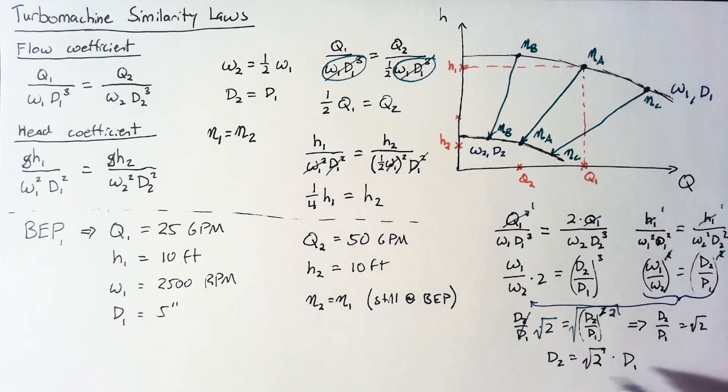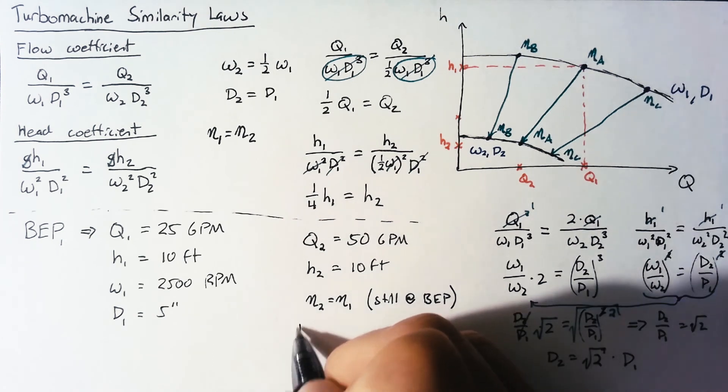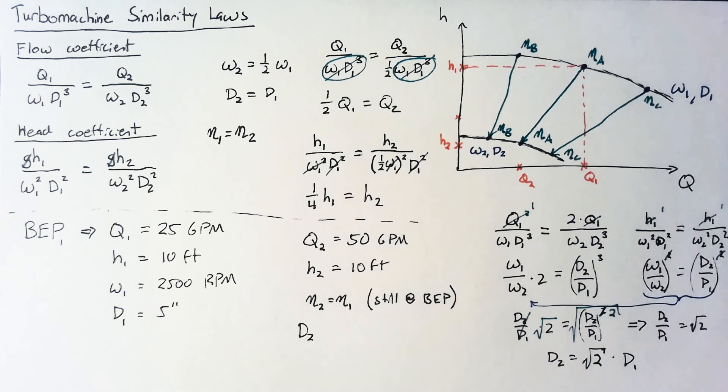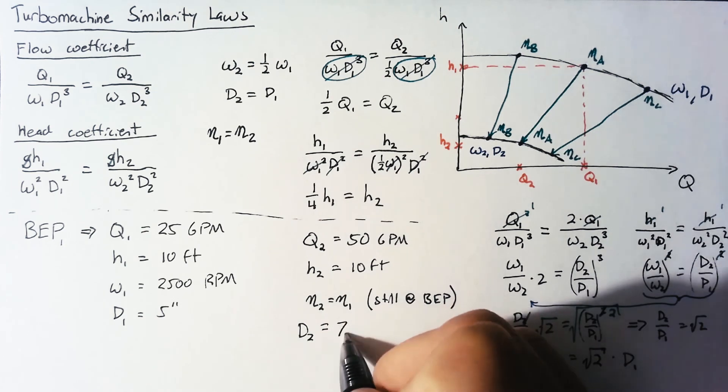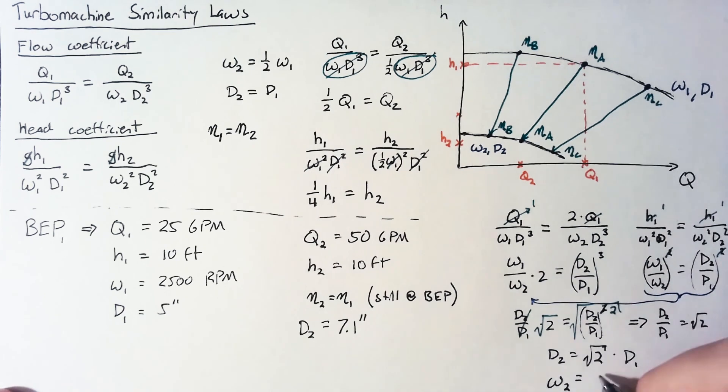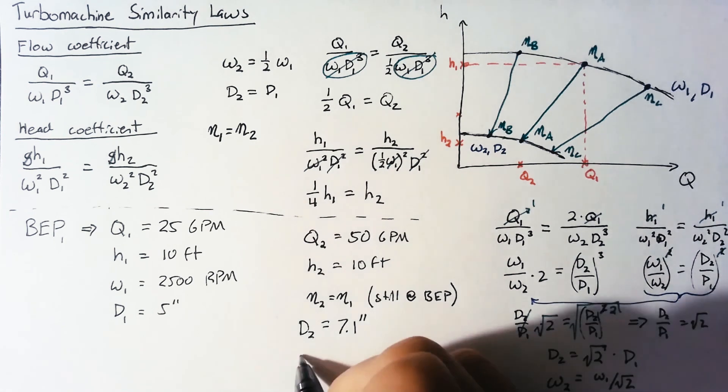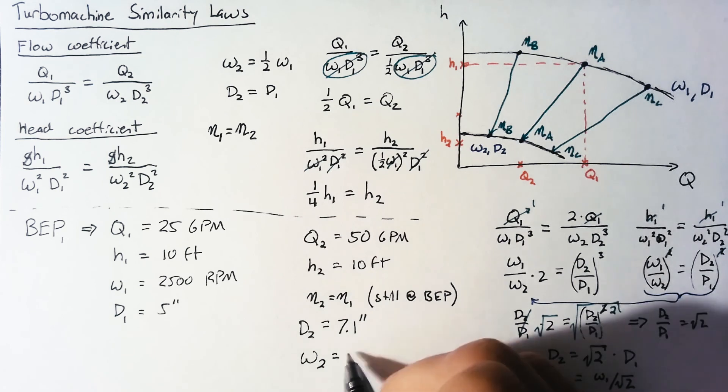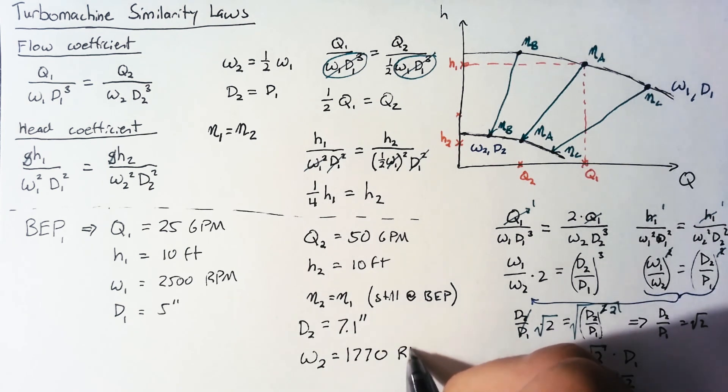Now we can actually plug in some numbers and we get that our diameter of our second pump should be right at 7.1 inches. Now plugging it in back to this equation we find out that our omega 2 is going to end up being our omega 1 divided by the square root of 2. That's pretty easy to plug in as well and we end up with our omega 2 running at 1770 rotations per minute.